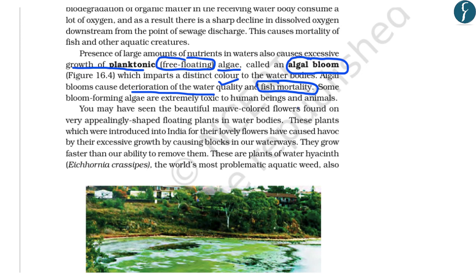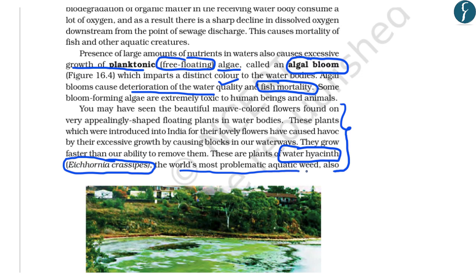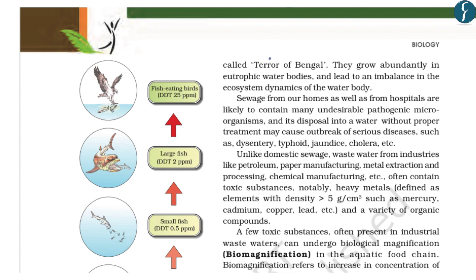Besides increasing algal bloom, discharge of nutrients into water bodies leads to the growth of invasive species if they are introduced. This chapter discusses one very important invasive species: water hyacinth. Its scientific name is Eichhornia crassipes and it is the world's most problematic aquatic weed. Its population increases because of discharge of nutrients into water bodies, and it is also known as the 'Terror of Bengal'.